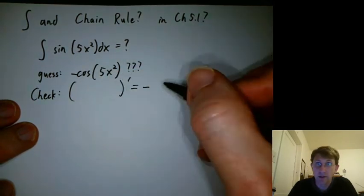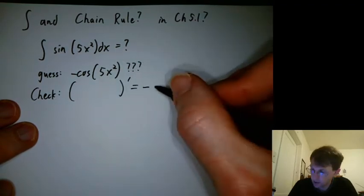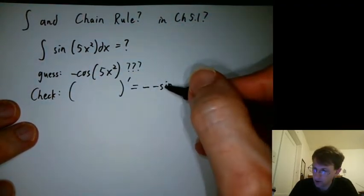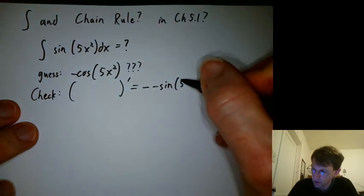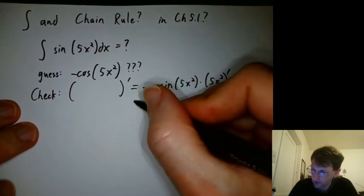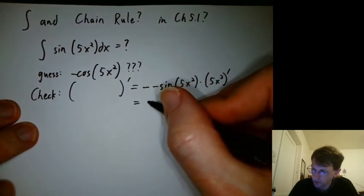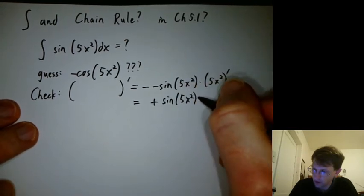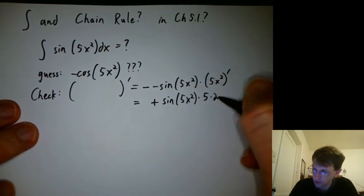Negative stays there. Derivative of cosine itself is negative sine. Hey, this is looking good. Negative, negative sine is sine. 5x squared times the derivative of the inside, 5x squared prime. So, we're getting positive sine 5x squared times 5 times 2x.